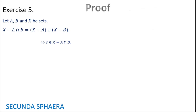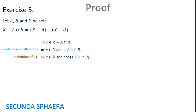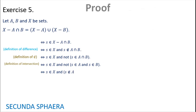Let s be in X without (A intersection B). This is equivalent to s in X and s is not in A intersection B — the definition of difference of sets. Again, we want to take out the not-in by writing it explicitly: s is in X and not (s in A intersection B). Just as in the previous case, we replace the definition of intersection and use De Morgan's law. This gives s is not in A or s is not in B — negation of conjunction.